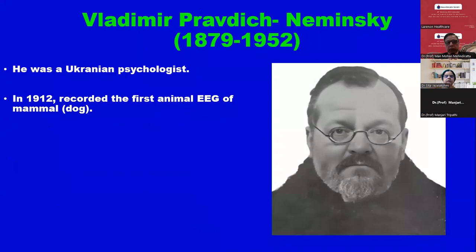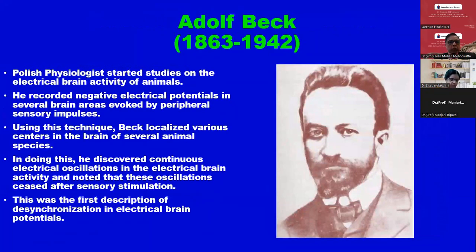Then comes Vladimir. We are all aware of the Ukraine war these days — he was a Ukrainian psychologist. In 1912, he recorded the first animal EEG of a mammal — a dog. Then will come Richard Caton, then Hans Berger. A Polish physiologist started studies on the electrical brain activity of animals, using this technique to localize various centers in the brain of several animal species.